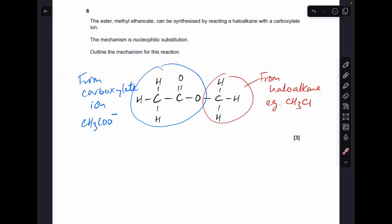Let me make a start. I've drawn up the structure of the ester methyl ethanoate. We're told it can be synthesized by reacting a haloalkane with a carboxylate ion. The methyl part in the ester is going to come from the haloalkane.